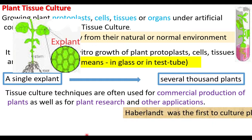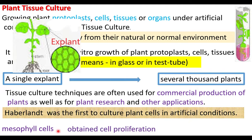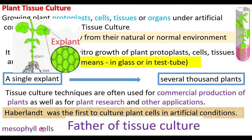Haberland was the first to culture plant cells in artificial conditions. He cultured cells collected from mesophyll — the tissue found between the upper and lower epidermis of a leaf. The cells started dividing and proliferating, so he is called the father of tissue culture.